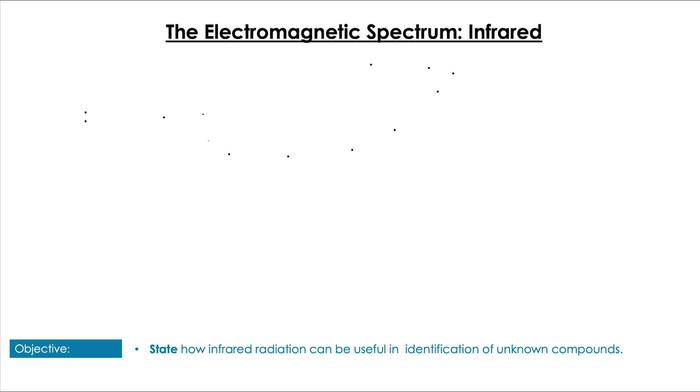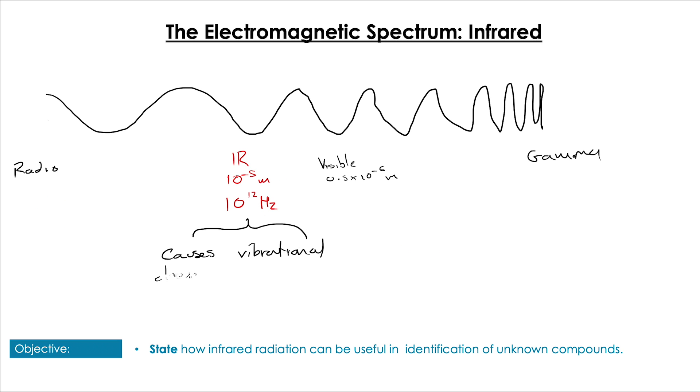So, a quick reminder, infrared radiation is part of the electromagnetic spectrum and it is just below visible light in terms of its energy and has a slightly longer wavelength. Now, what's special about infrared radiation is it causes vibrational changes in chemical bonds.